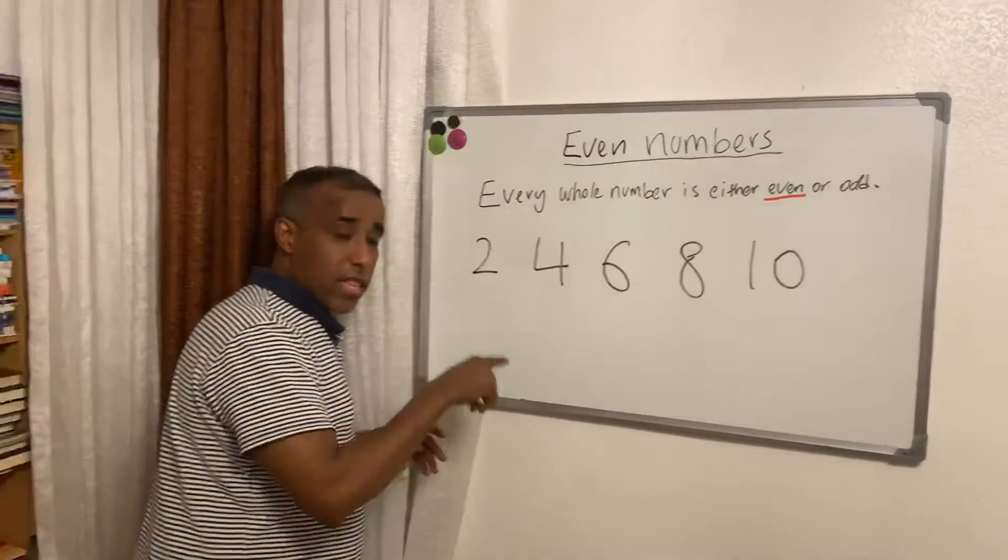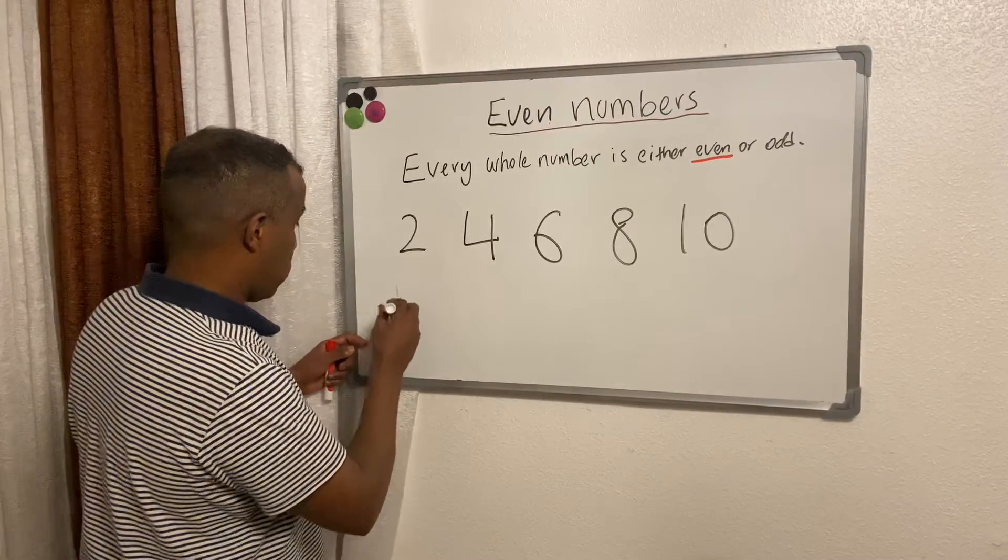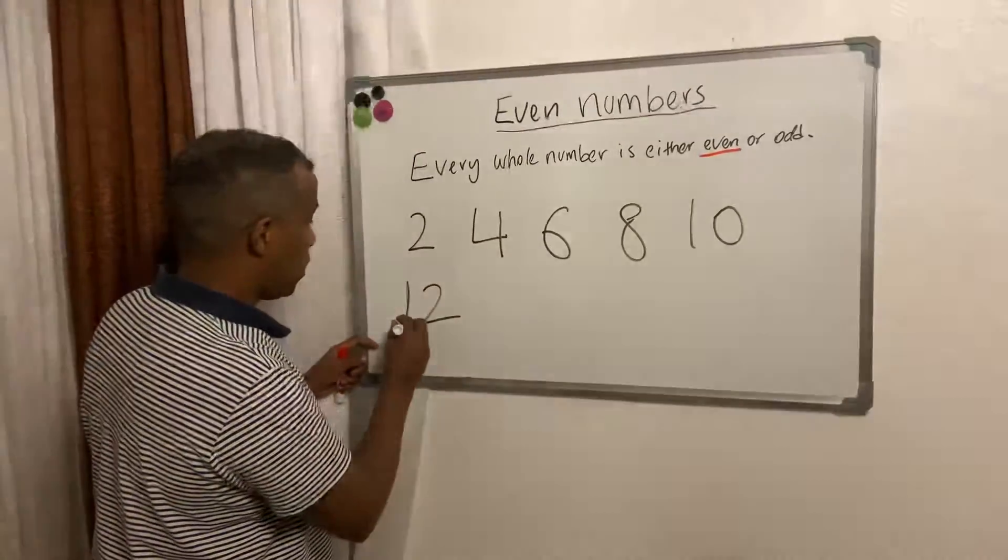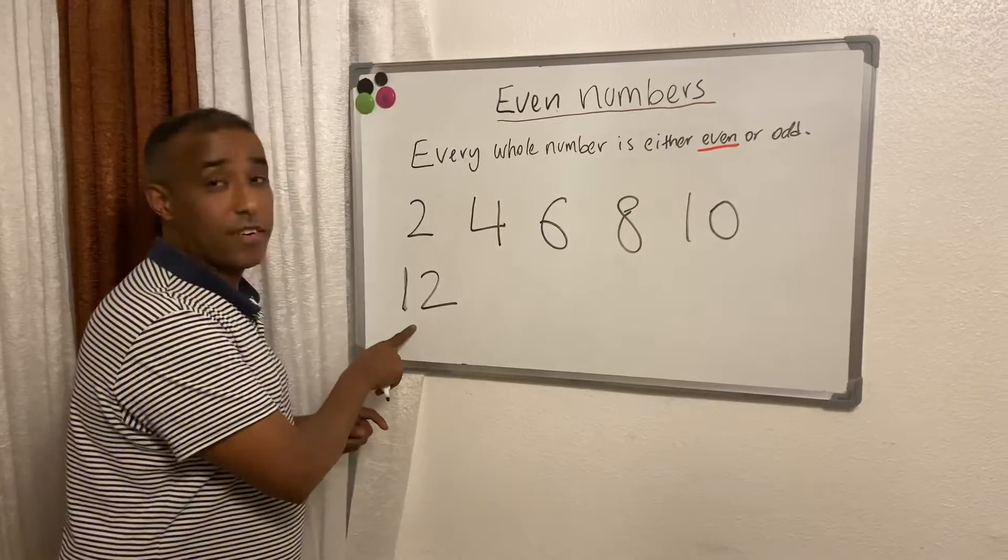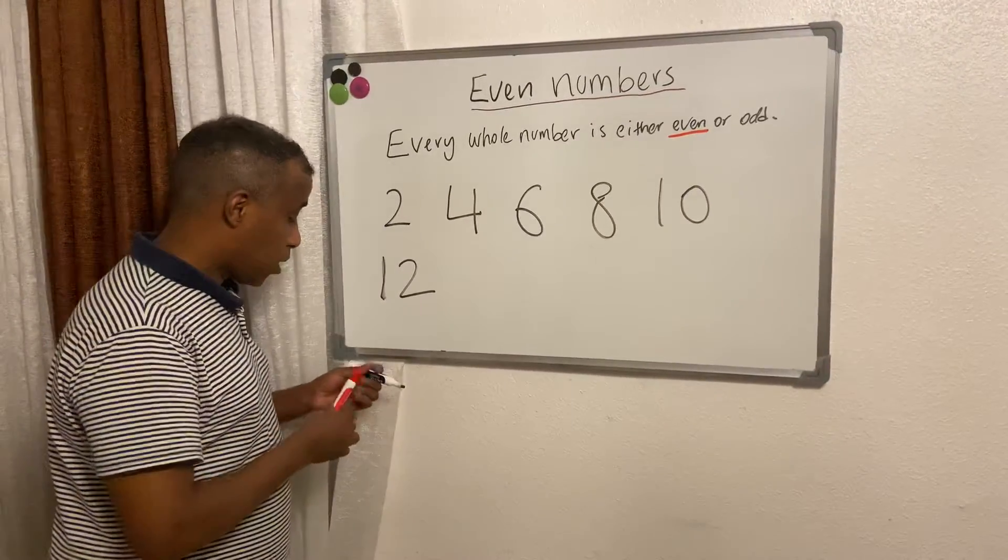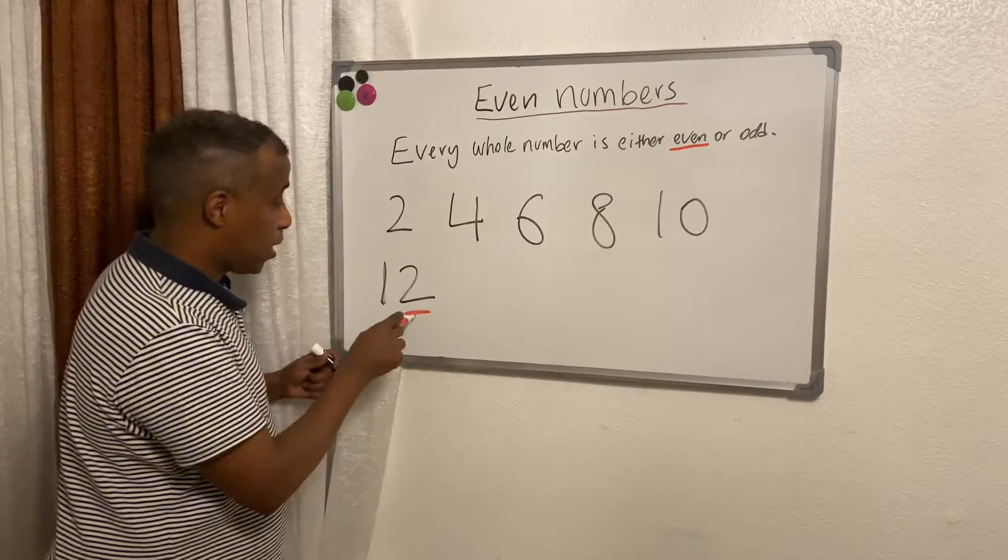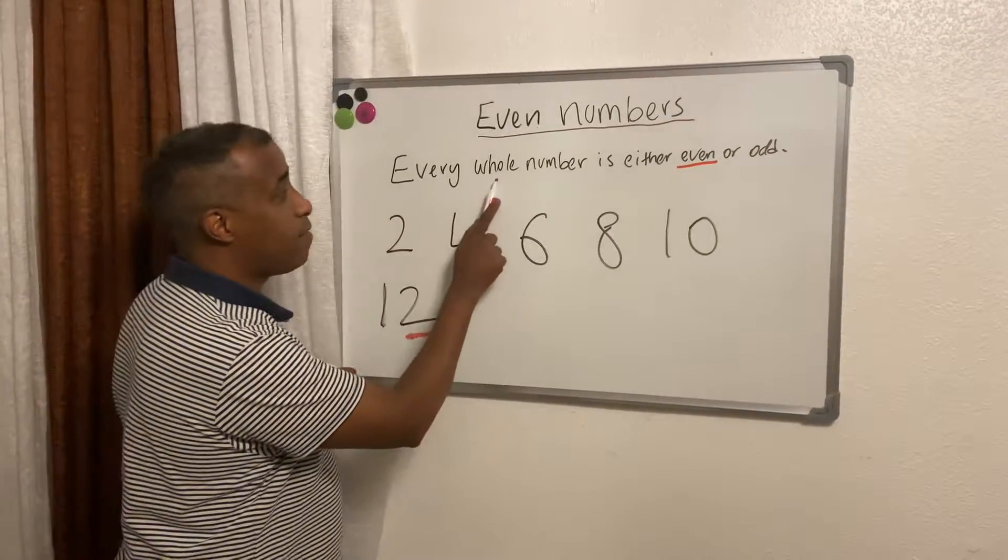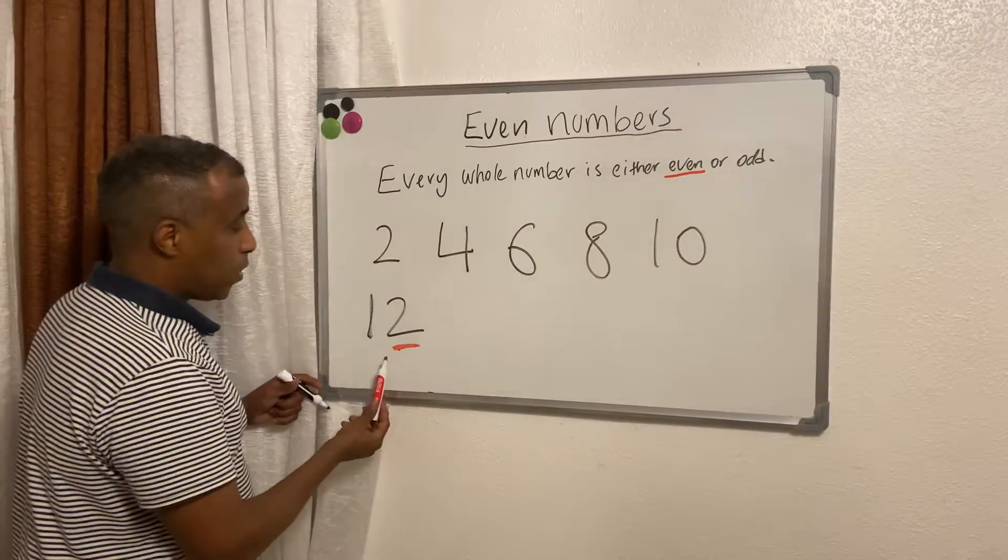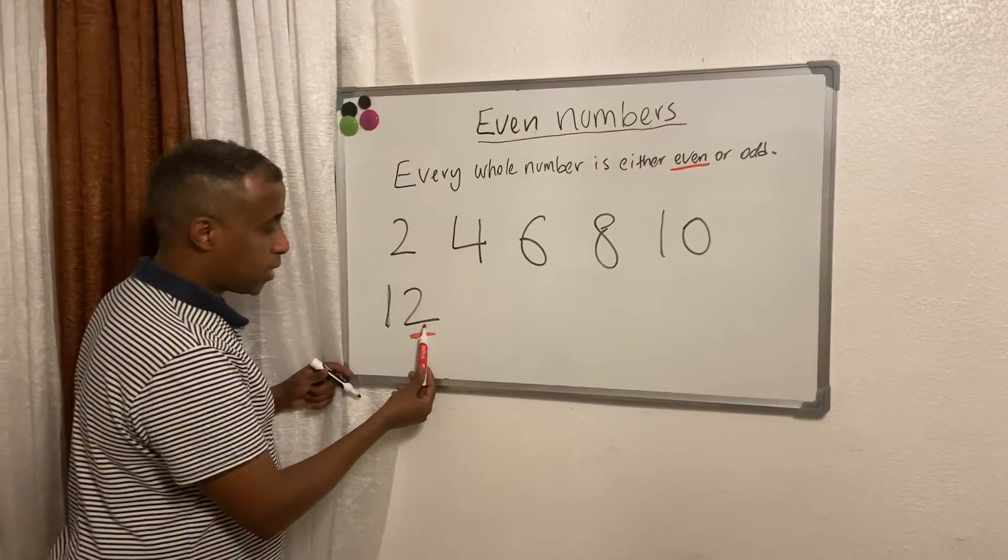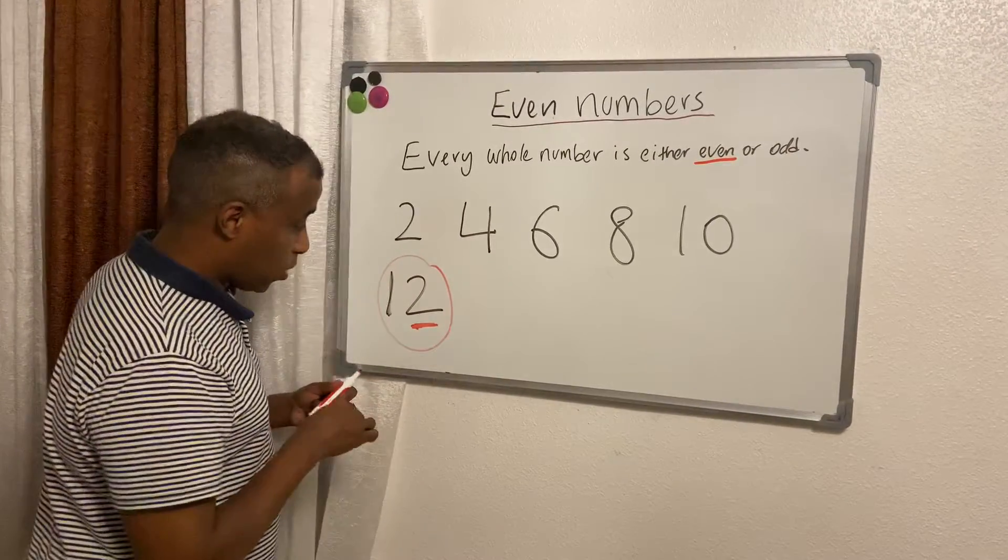I'll give you an example. Let's do 12. Is 12 odd or even? It's even because we know 2 is an even number. And then it says here every whole number is either even or odd. If the last number is even, the whole number is even.